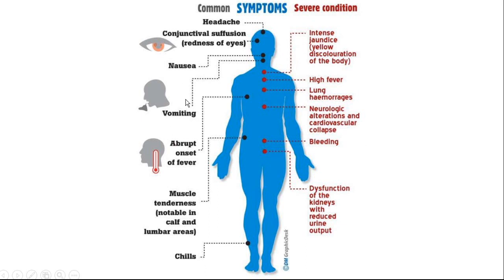In the previous few slides you learned about the common symptoms of this disease, which are headache, nausea, vomiting, fever, muscle fatigue, and chills. In this slide, you can see some severe conditions during rat bite fever, namely intense dryness, yellow discoloration of the body, high fever, lung hemorrhage, neurologic alterations, and cardiovascular collapse.